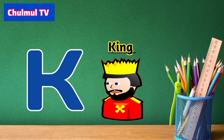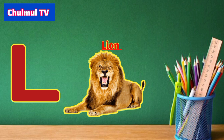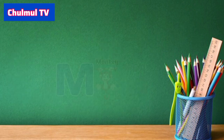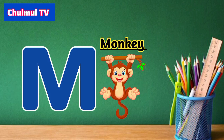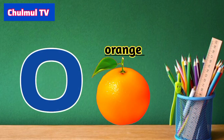K for king, L for lion, M for monkey, N for nest, O for orange.